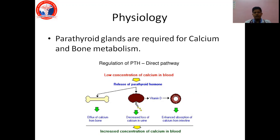In physiology, the parathyroid glands are required for calcium and bone metabolism. The prime regulator of parathyroid hormone is the calcium concentration in the blood. Whenever there is low calcium, parathyroid hormone is released from the gland, causing efflux of calcium from the bone and decreasing loss of calcium in the urine. It also helps in production of vitamin D in the kidney, which in turn causes enhanced absorption of calcium from the intestine, thereby closing the feedback loop.